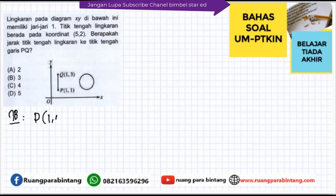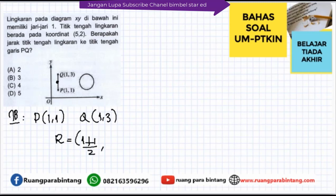Titik P itu kan 1,1 dan Q-nya itu adalah 1,3. Untuk titik tengahnya kita misalkan R. Maka koordinat x-nya: 1 tambah 1 dibagi 2, dan koordinat y-nya: 1 tambah 3 dibagi 2. Maka titik tengahnya adalah titik R yaitu 1,2.